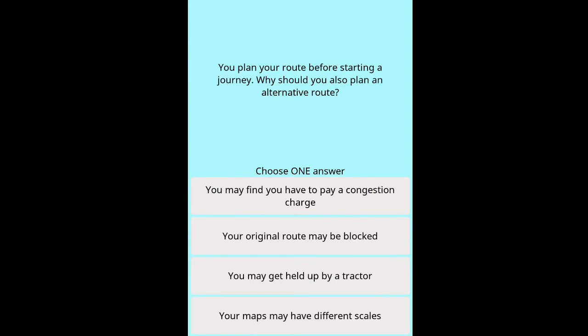Question: You plan your route before starting a journey — why should you also plan an alternative route? Options: you may find you have to pay a congestion charge, your original route may be blocked, you may get held up by a tractor, your maps may have different scales.